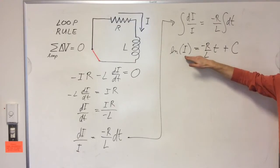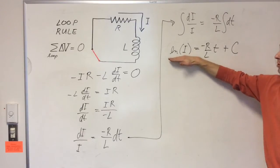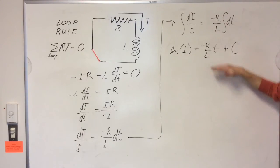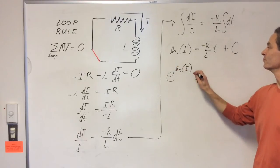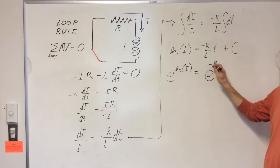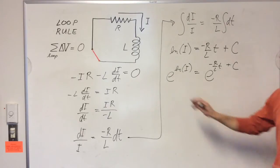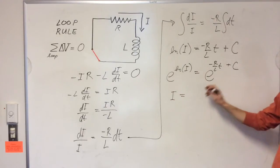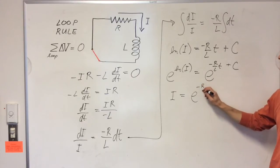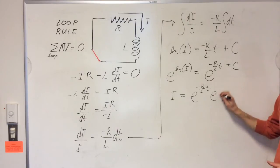So to get the current i, what we need to do is do the inverse operation of taking the natural log. And that is putting both the left-hand side and the right-hand side in the power of e. So here we go. All right, the left-hand side then gives us the current. The right-hand side gives us e to the minus r over l times t, and then times e to the c.